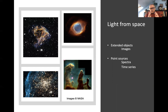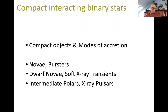But often what we have to deal with in astronomy are just a point source of light — a star. For most stars they're so far away we can't resolve them into anything like an extended disk; we just see a point of light. So we have to study these points of light differently — by looking at the spectrum of the light, how it's distributed with wavelength or frequency, and we can look at the time series of that light, how the brightness varies with time. I'll start by talking about compact objects and modes of accretion, then novae and bursters, dwarf novae, soft X-ray transients, intermediate polars, and X-ray pulsars.